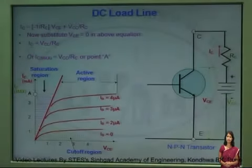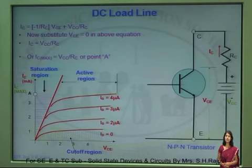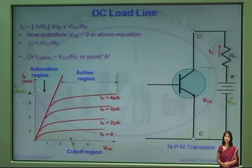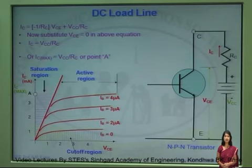Now let's consider the equation and substitute Vc equal to 0. The equation is Ic equal to minus 1 by Rc into Vce plus Vcc by Rc. If I put Vc equal to 0 in this, then Ic is given by Vcc by Rc.